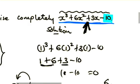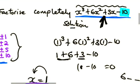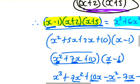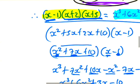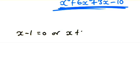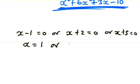These are our factors. To solve, we equate each factor to zero: x minus 1 equals 0, or x plus 2 equals 0, or x plus 5 equals 0. Therefore, x equals 1, or x equals negative 2, or x equals negative 5.